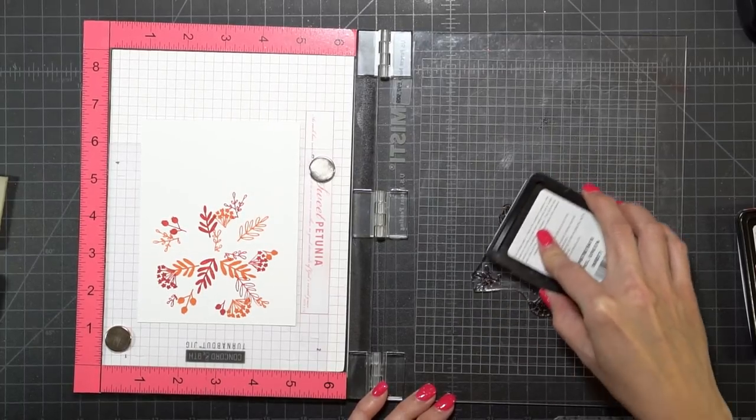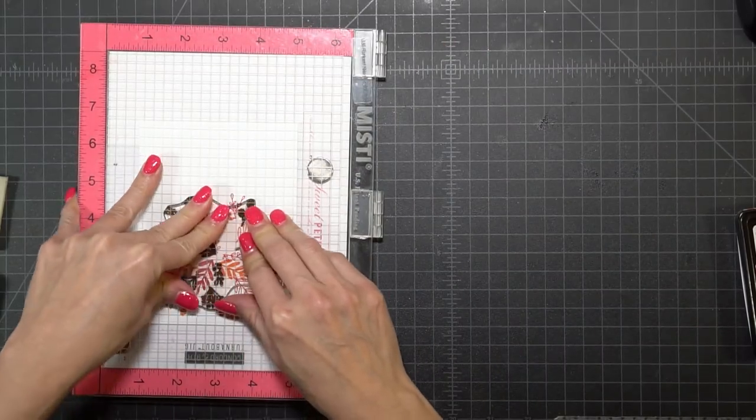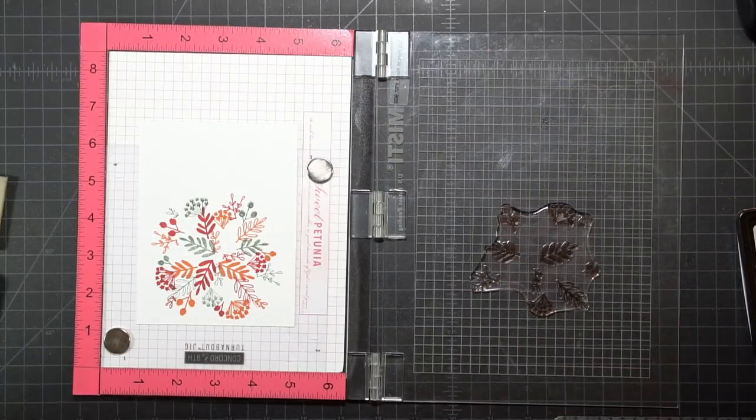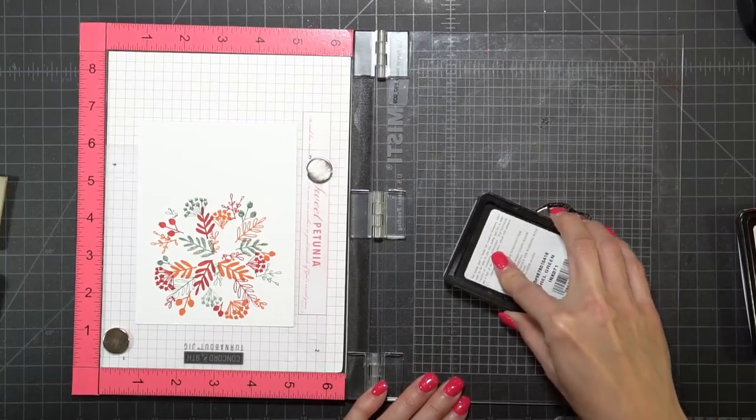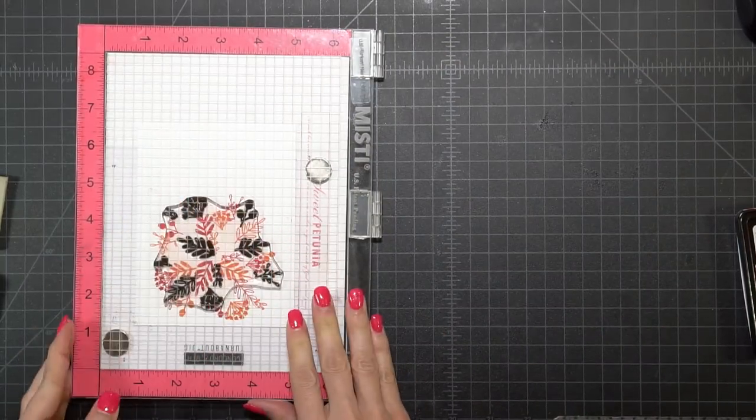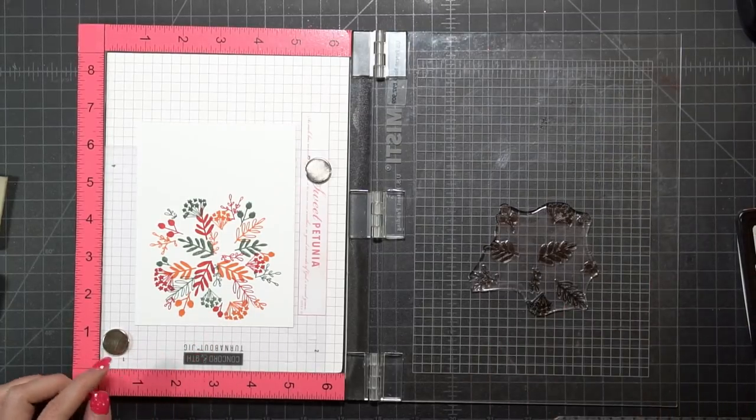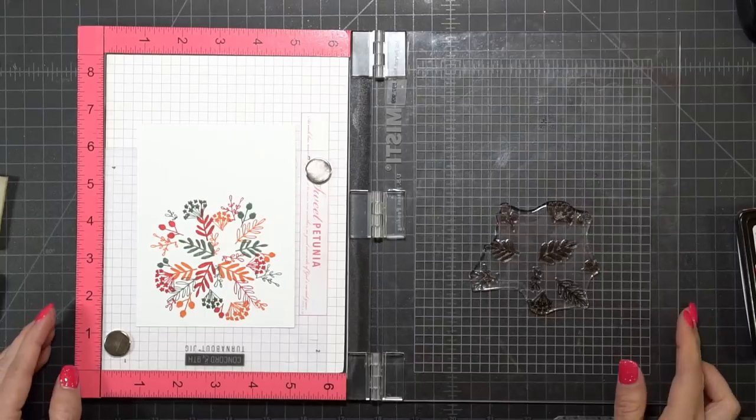Now I'm using Simon Says Stamp Laurel Green to stamp. I'm going to do this a couple of times because I want this to be just as dark as the other colors. I'm missing a little spot, so I'm just going to add a little ink to that one spot.